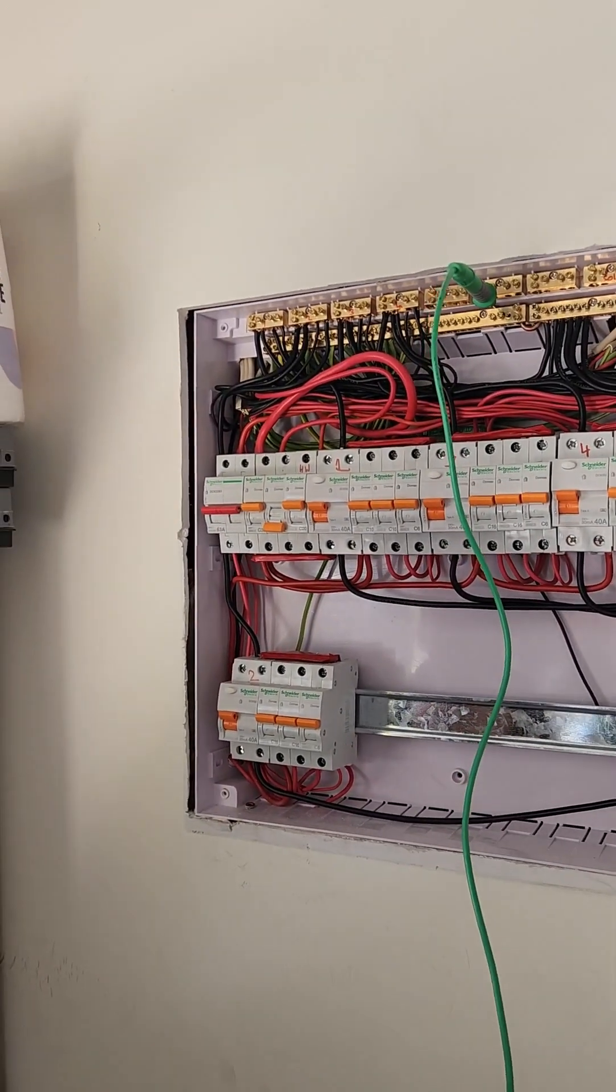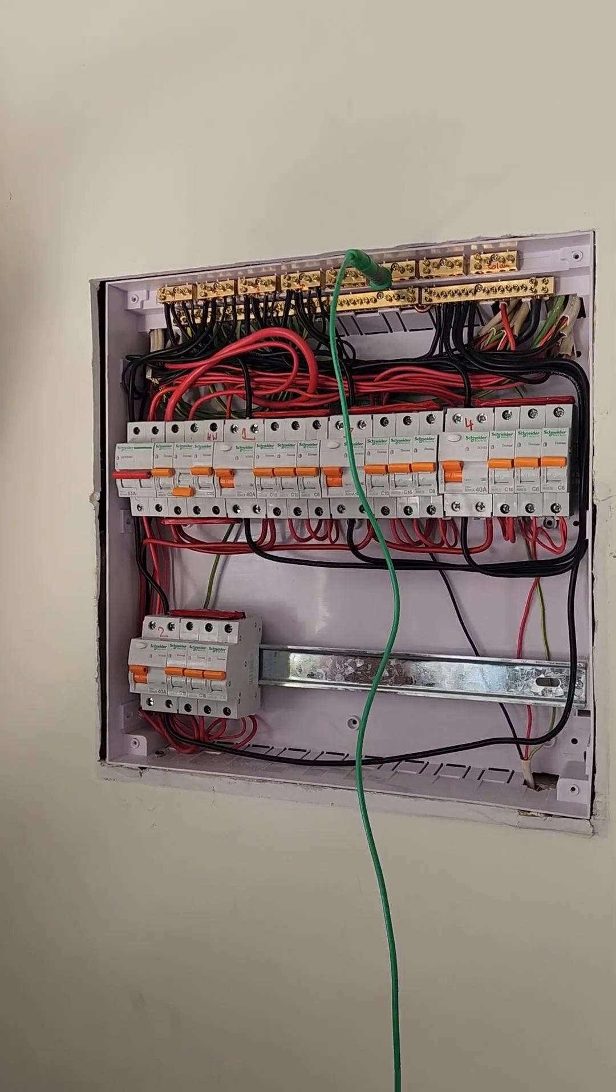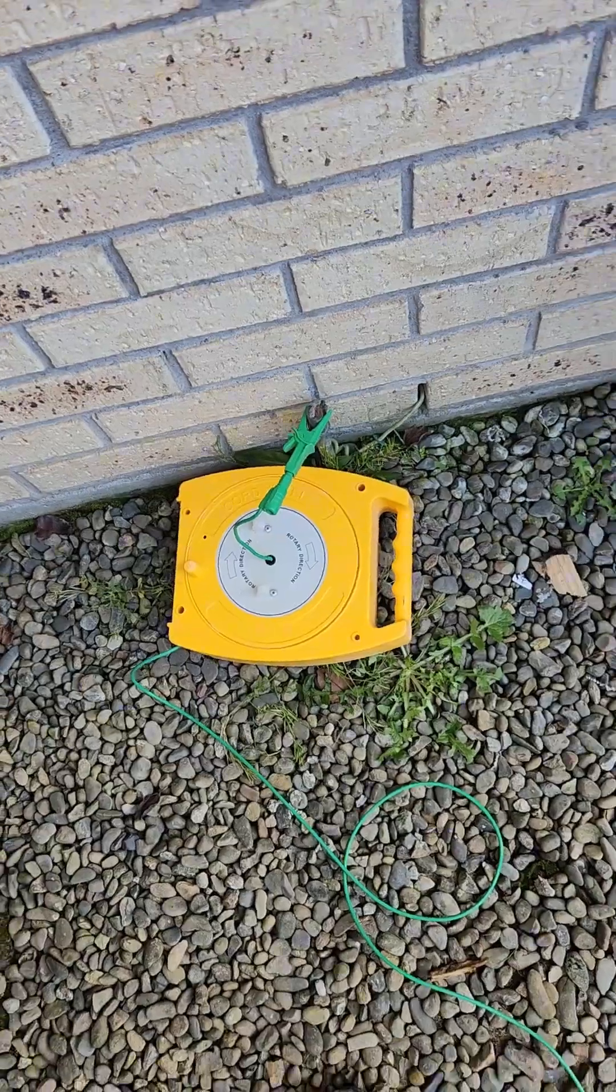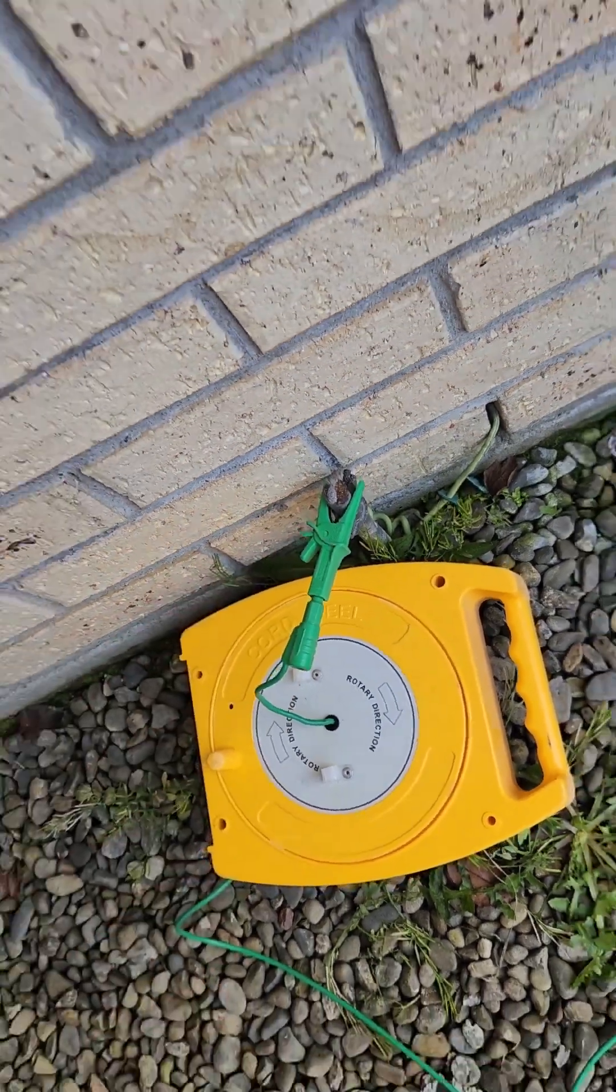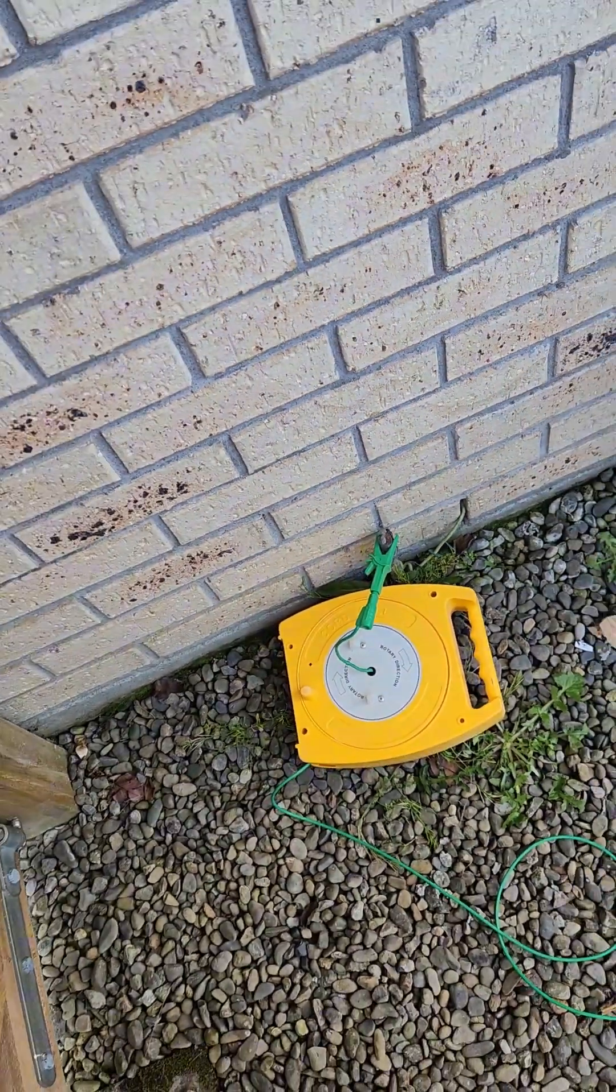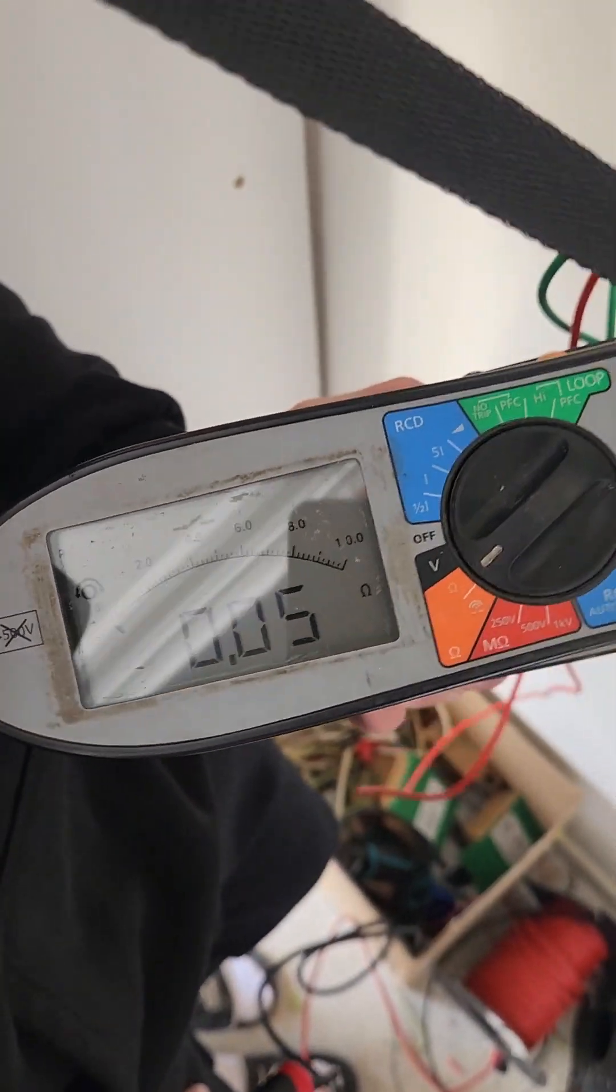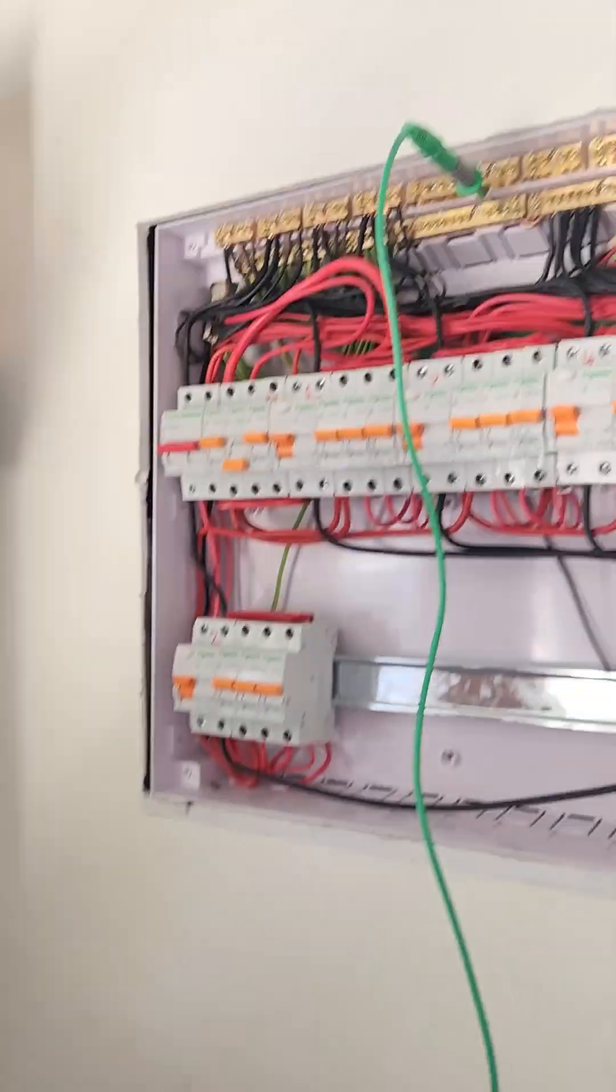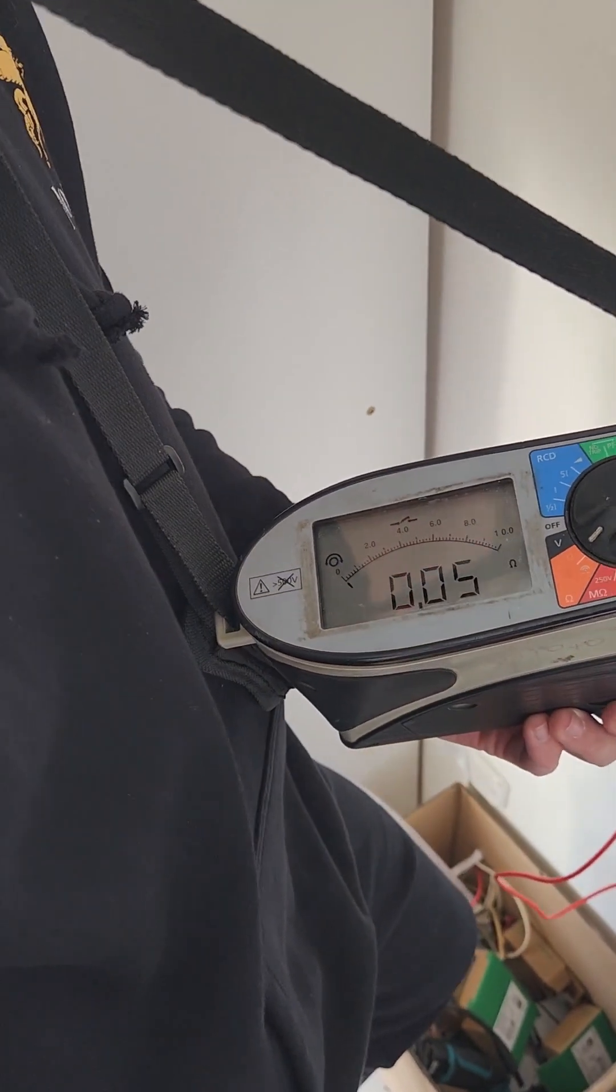Next thing we will do is we'll run a fly lead out and we'll test the main earth. It's not required because we've just done a switchboard upgrade, but we'll check it anyway since we are in the midst of testing things. I've got my fly lead attached there, goes off into the house. Okay, we've just turned it on to ohms, and we are at 0.05 of an ohm, and the maximum for a main earth is 0.5 of an ohm, so we are well and truly below regulation.